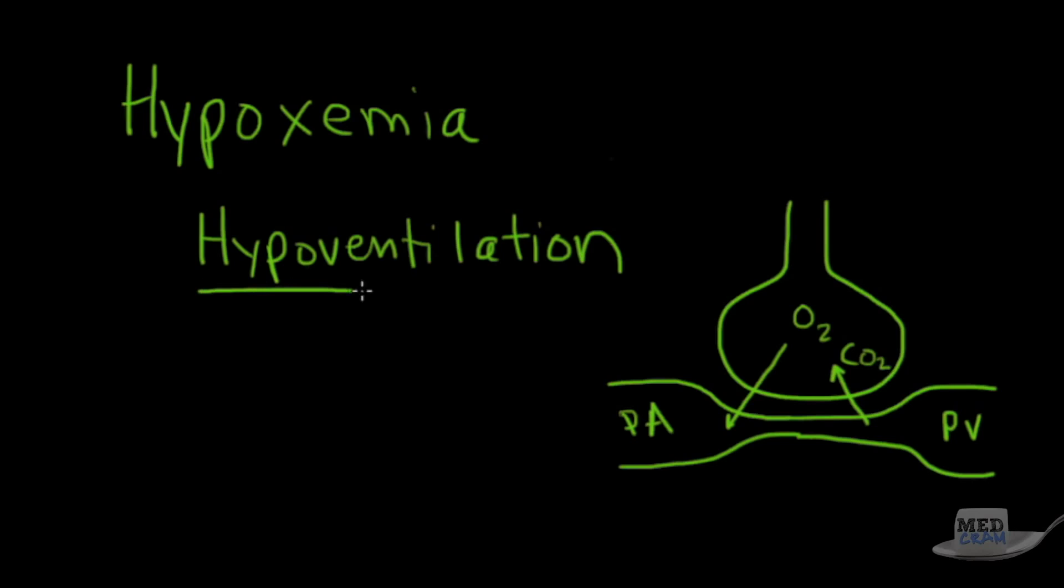So how is hypoventilation going to cause hypoxemia? Well, hypoventilation is simply when the lung or the respiratory rate or the tidal volume goes down, so that the amount of ventilation that's occurring, the amount of air that's going in and out of the lung, is decreased.